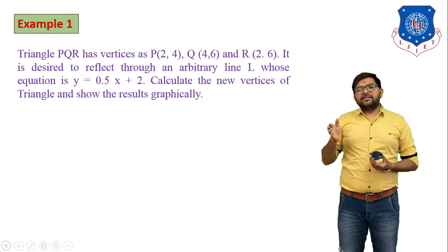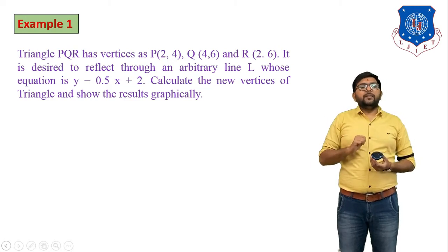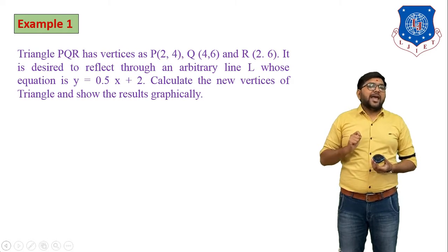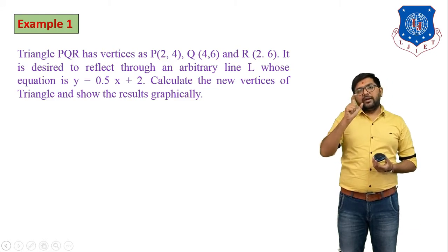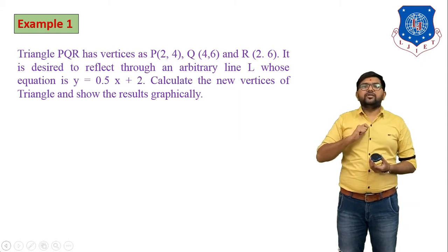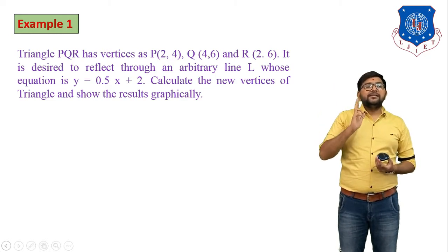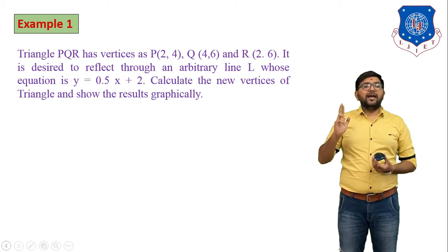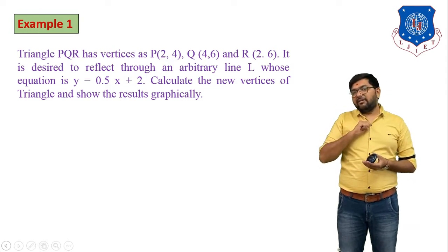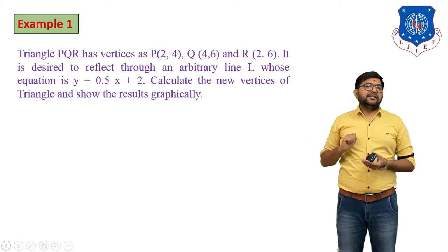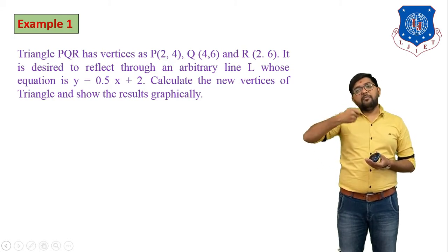This process we already discussed in our last lecture, so in today's session we have to solve a numerical based on it. Triangle PQR has vertices P, Q, and R — three coordinates of the triangle are given. All coordinate values are positive, so the triangle is placed in the first quadrant. It is designed to reflect through an arbitrary line L whose equation is y = 0.5x + 2, and we have to find the reflection of the triangle above this straight line.